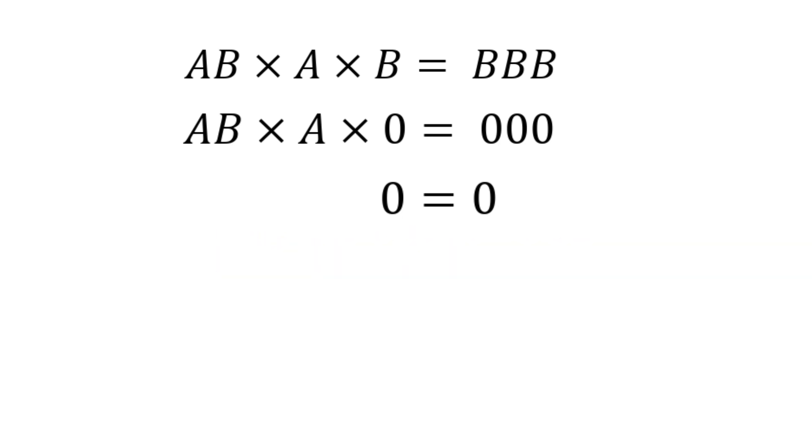We can rewrite this as AB is a two-digit number. A is in tenth place, so 10A plus B times A times B equals... This BBB can be rewritten as 100B plus 10 times B plus B.